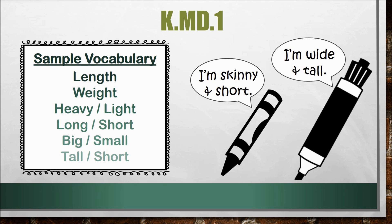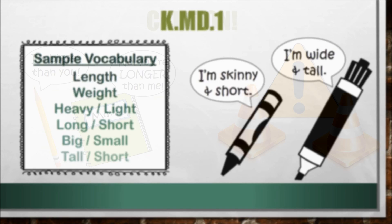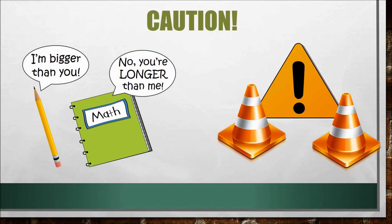Be sure to model appropriate vocabulary and provide students with opportunities to use this vocabulary in context. Students must have a variety of opportunities to use their senses to describe actual objects, not pictures on a worksheet. Students can use their sense of sight and touch to determine if a block is heavy, tall, long, and so on. Encourage students to make self-connections to measurable objects by discussing objects relevant to them.